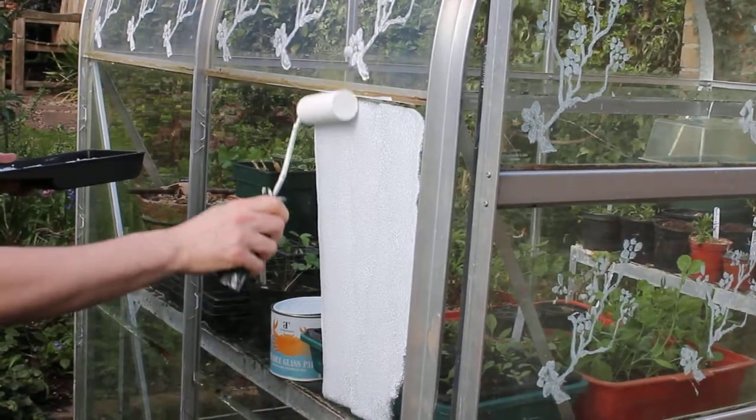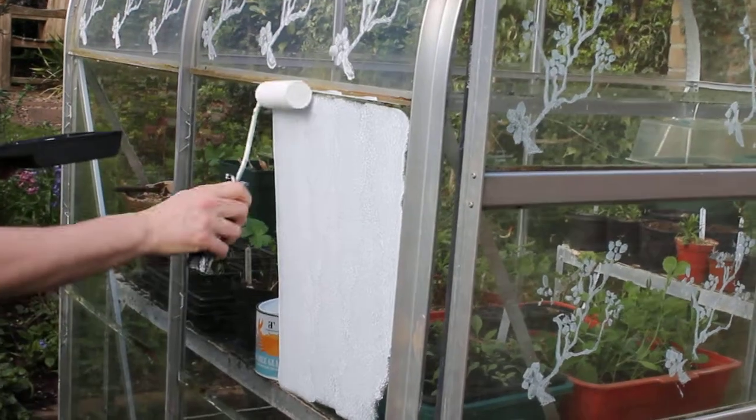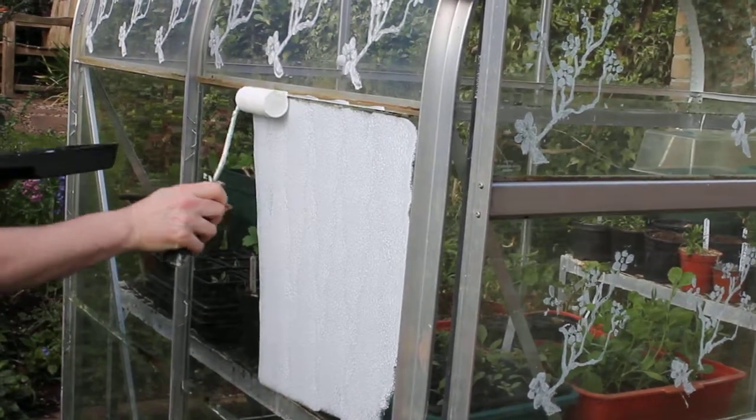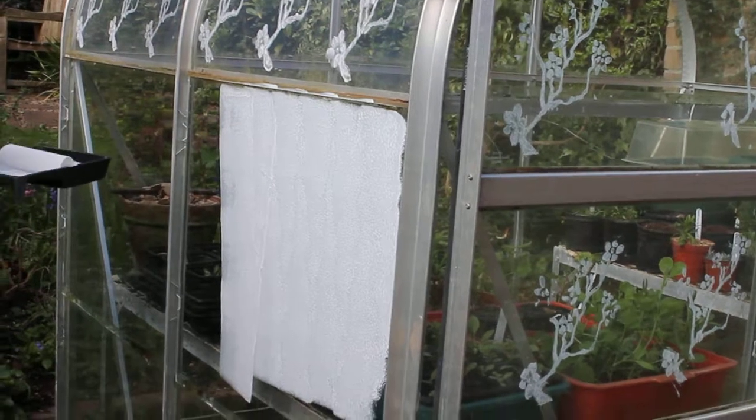As you can see, it goes on very easy with a roller. Best to use a foam sleeve on it and then literally just roll it over your glass panes.